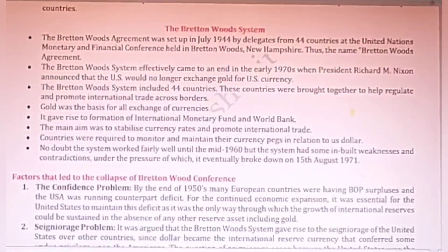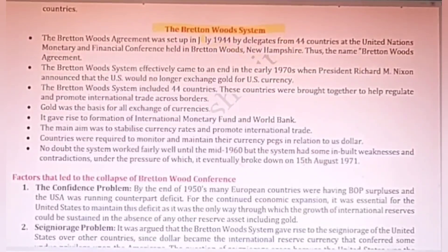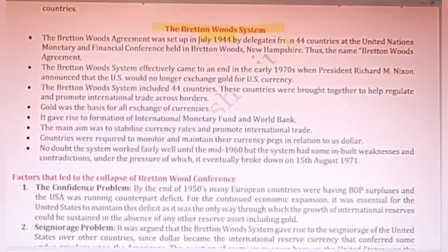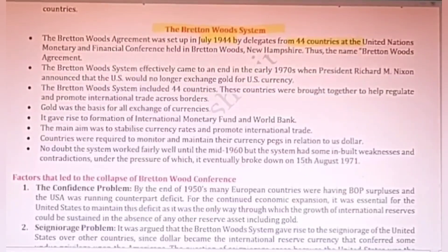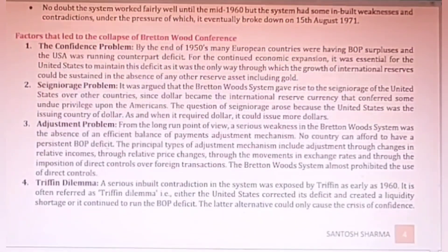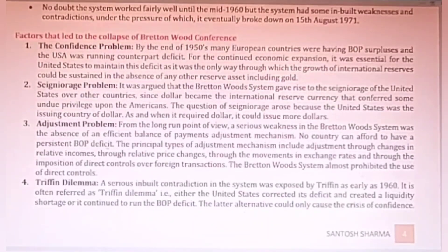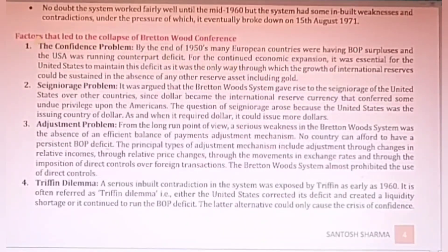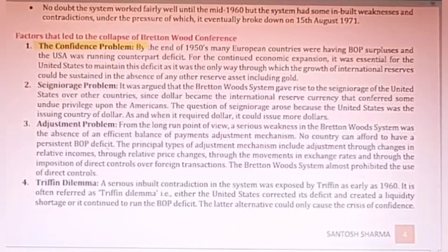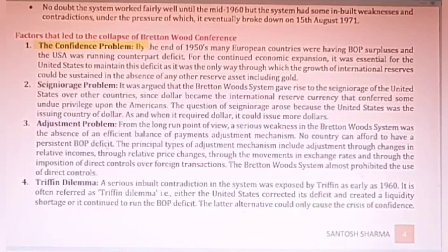You can get a short note on the Bretton Woods System. It was set up in 1944 and 44 countries were a part of it. Due to some deficiencies it was merged into WTO. There are some drawbacks which led to the formation of WTO after the 1970s. Basically there was a confidence problem because at that time the US dollar played an important role in the exchange rate.